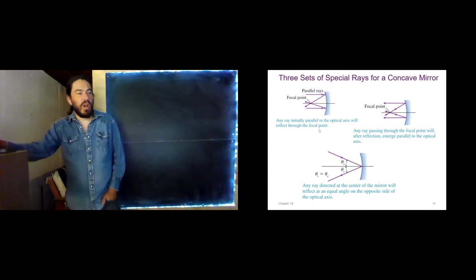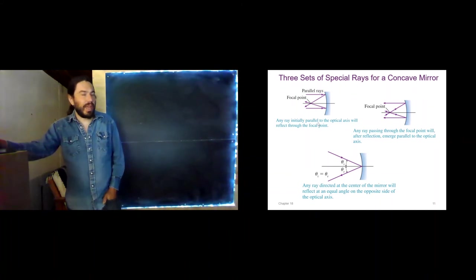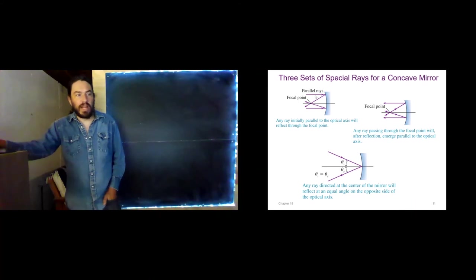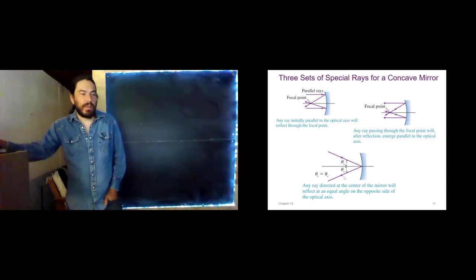So again, three rays. We can think of them as different because they're mirrors, but I think it's easiest to think of them as the same rays we've already learned about. One ray comes in parallel, one ray leaves parallel, and one ray comes out at the same angle as it went in.